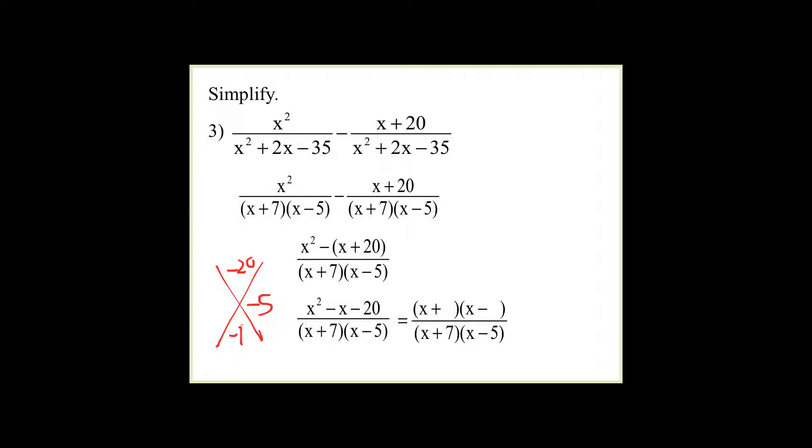How about negative 5, positive 4? And now we see we can cross cancel the binomials x minus 5 over x minus 5, and we are left with x plus 4 over x plus 7.